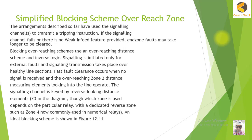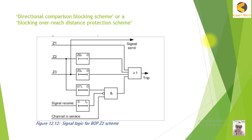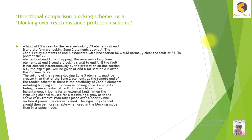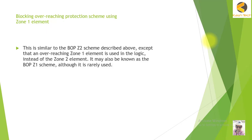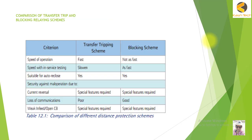We will then study the simplified blocking scheme and overreached zone schemes in detail, followed by the Directional Comparison Blocking scheme and the Blocking Overreached Distance Protection scheme. I will explain the conceptual differences between these. We will also discuss blocking overreached protection using the Zone 1 element, which involves a very small modification, and cover the Directional Comparison Blocking scheme in full.